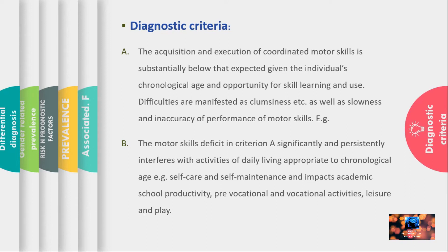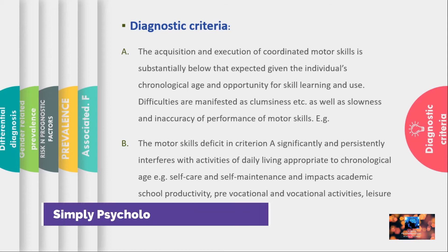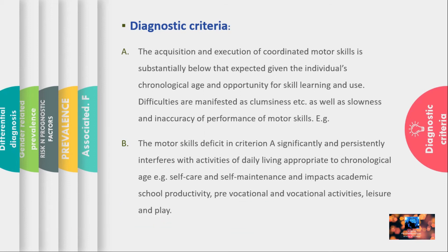If we talk about Criterion B, the motor skills deficit from Criterion A is significant and interferes with daily life activities appropriate to the individual's age. For example, self-maintenance, self-care, social impact, and academic or school productivity are all negatively impacted and productivity decreases. Pre-vocational and vocational activities also create issues.